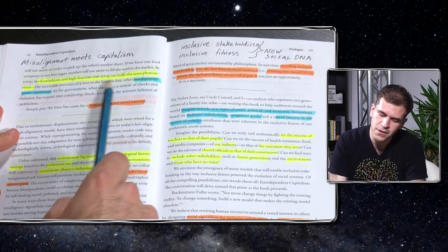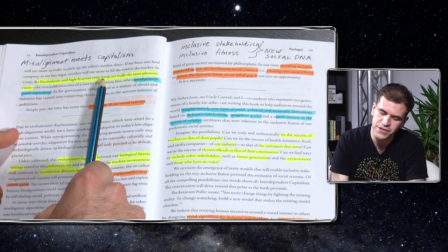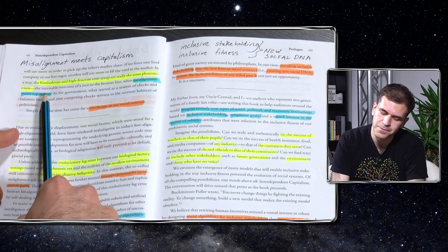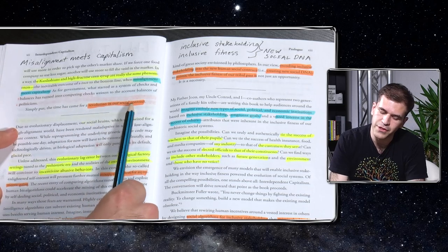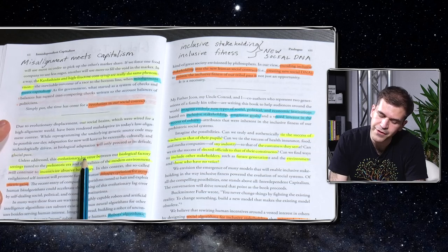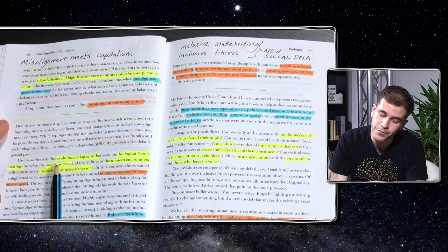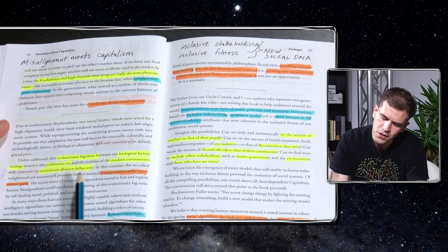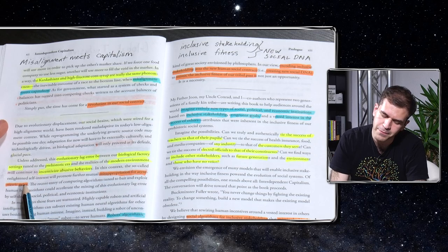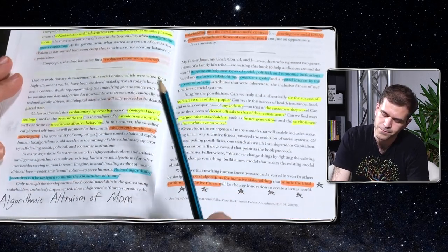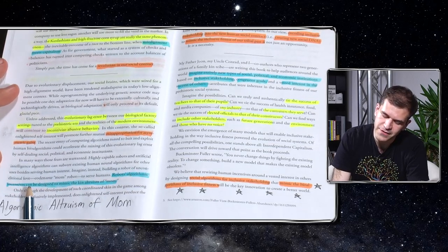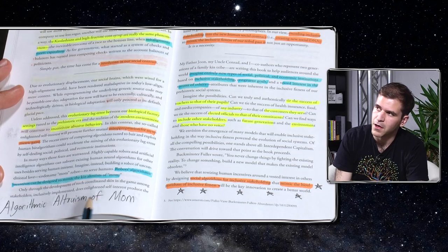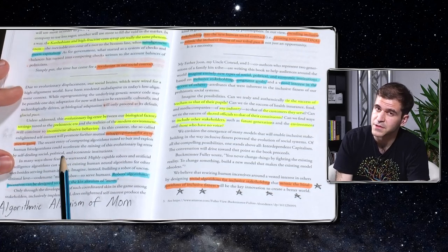Misalignment meets capitalism. In a way, the Kardashians and high-fructose corn syrup are really the same phenomenon. The inevitable outcome of a race to the bottom line when misalignment meets capitalism. The time has come for a revolution in our social contract. Unless addressed, this evolutionary lag error between our biological factory settings tuned to the prehistoric era and the realities of the modern environment will continue to incentivize abusive behaviors. Promote further mutual misappropriation for asymmetric gains. Can we make the algorithmic altruism of mom and embed that into our artificial intelligence systems? It's a very interesting question.